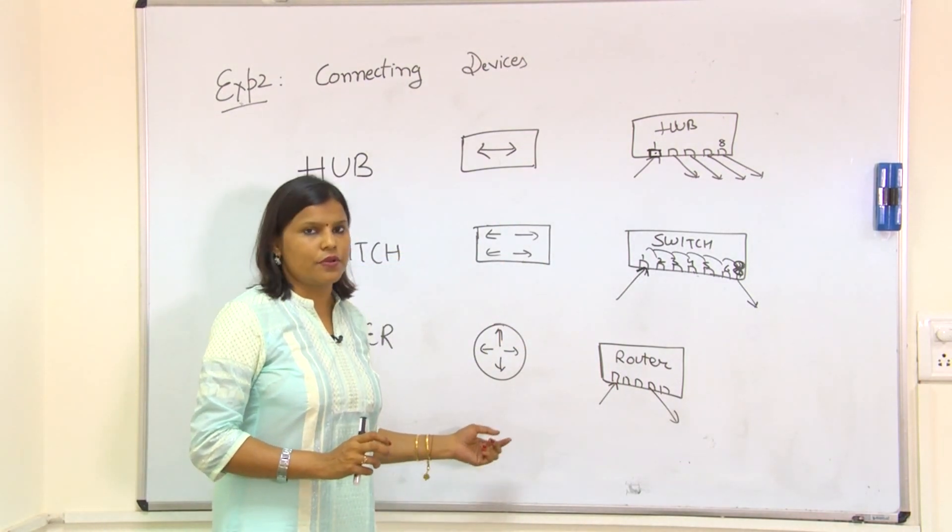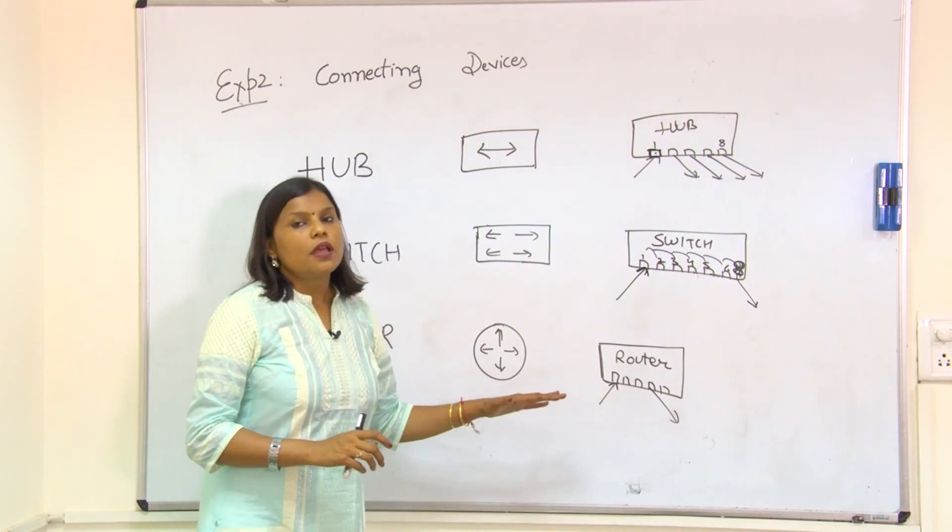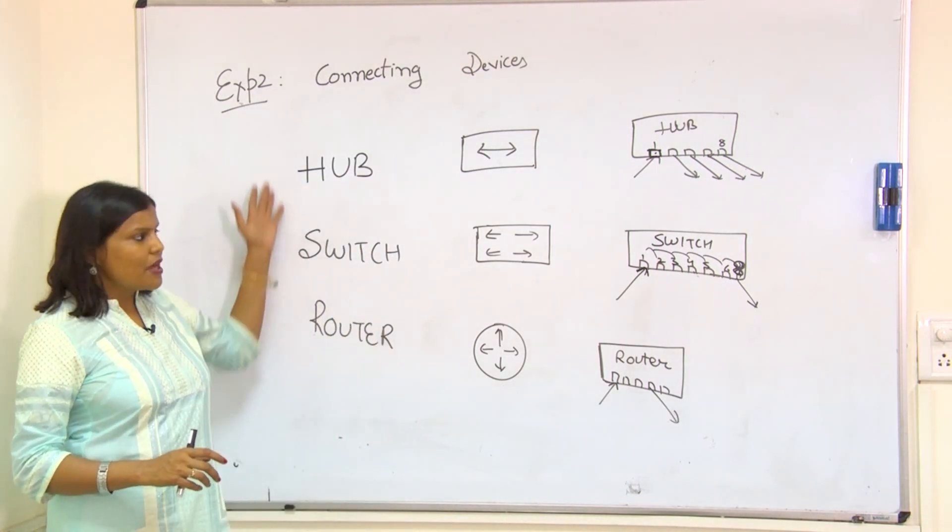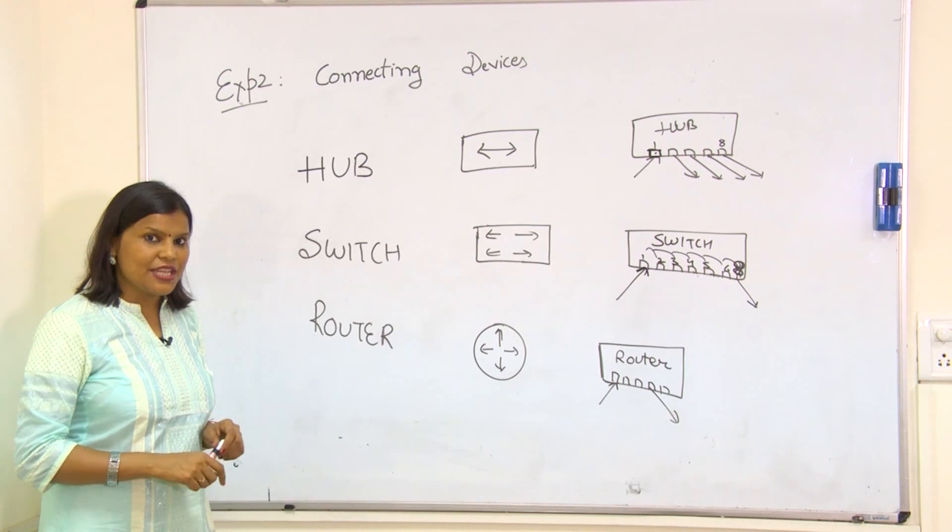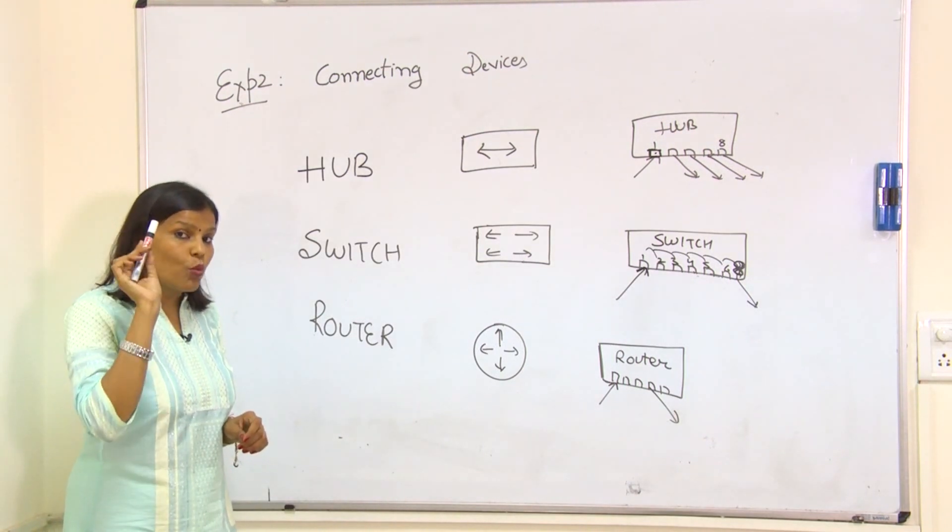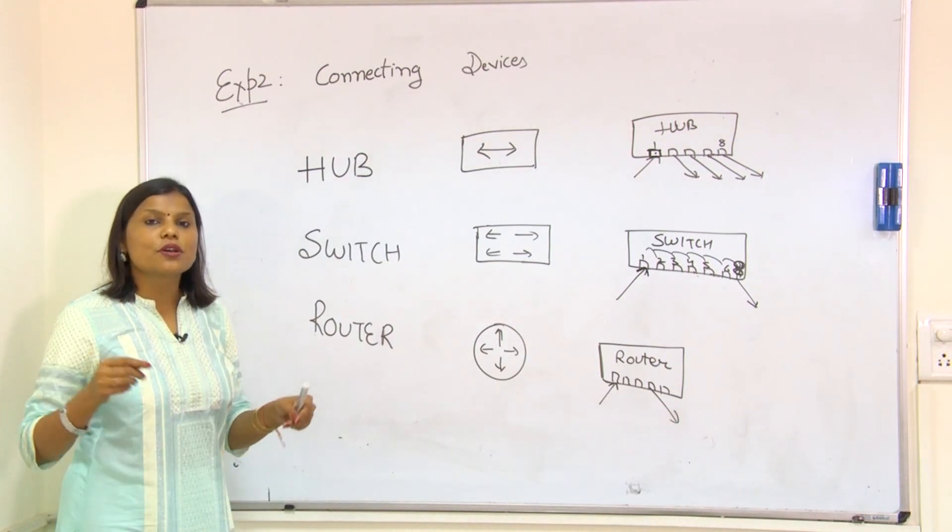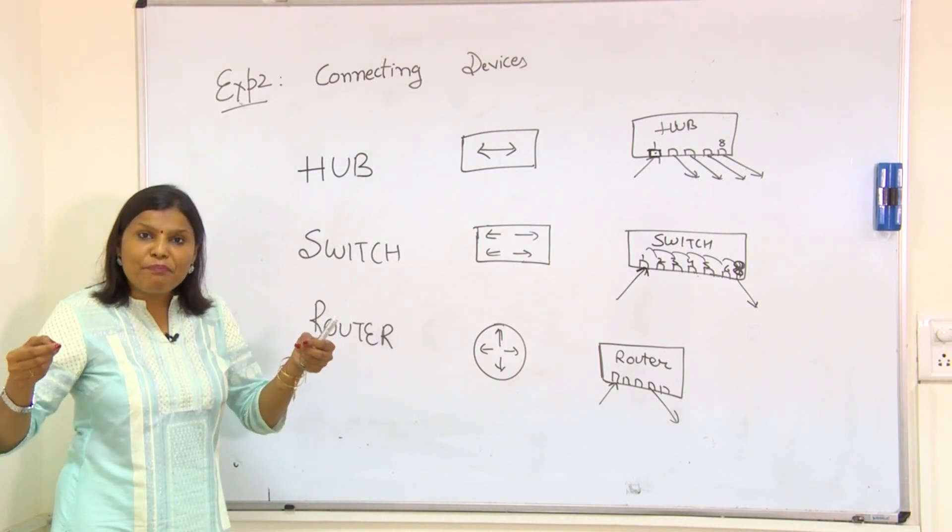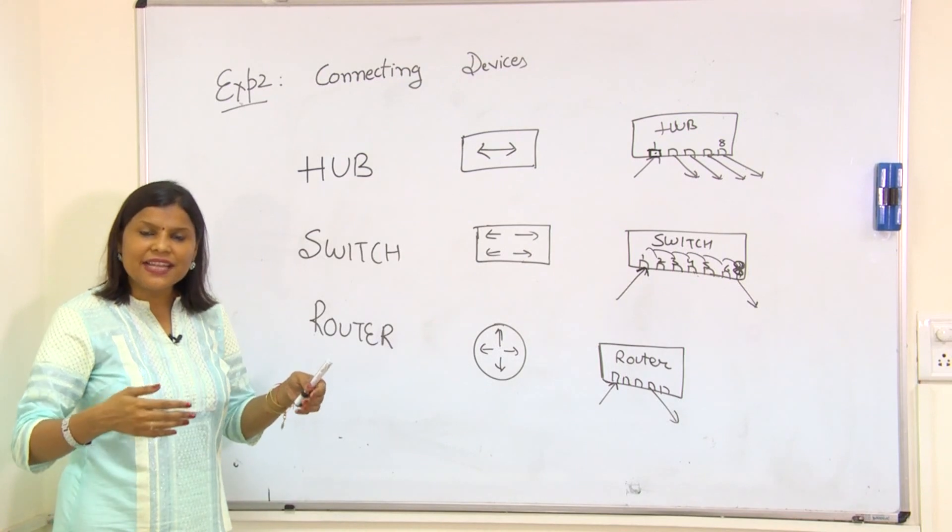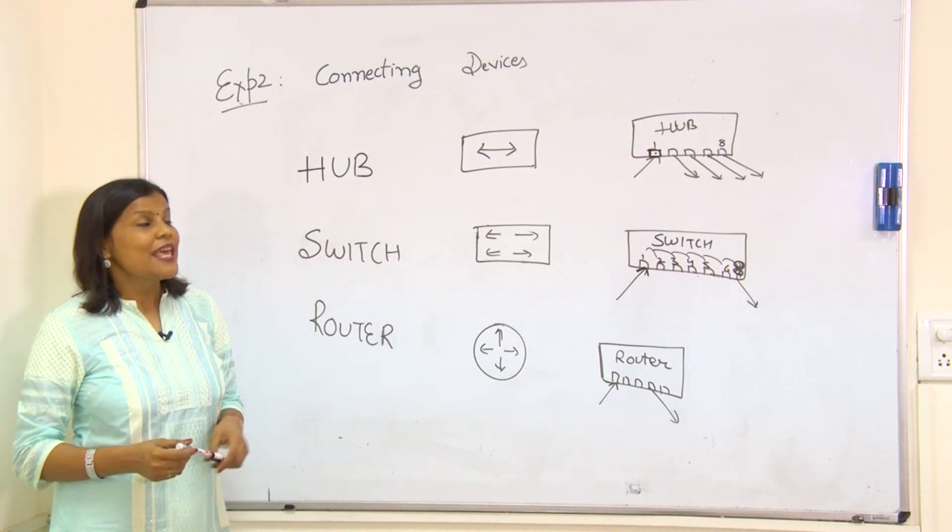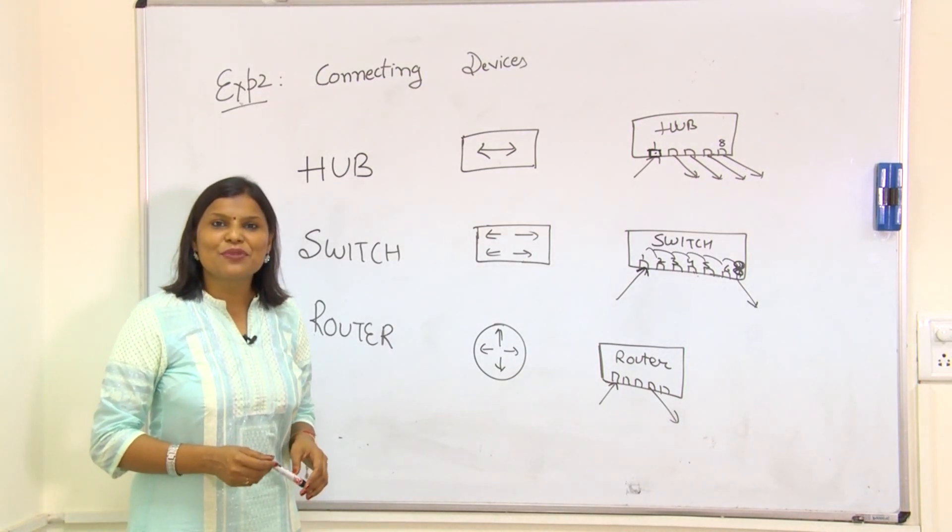Router is the most expensive among the three and the most intelligent one. I want to remind one more point: router is similar to PC because they both have the same pin design for sending and receiving data. That's all for experiment number two. Thank you.